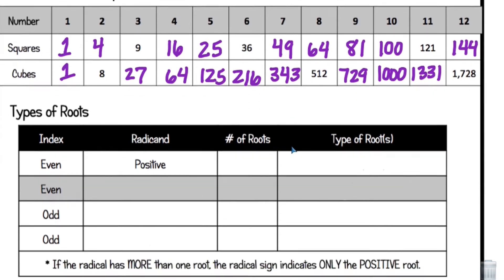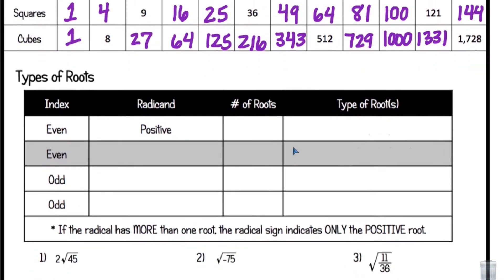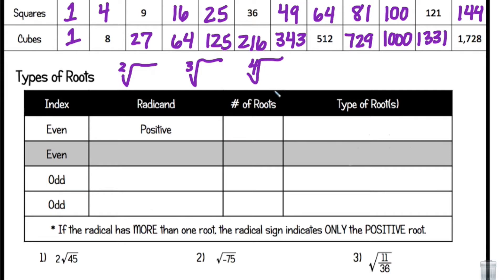Once you have that, we can continue on with types of roots. For types of roots, we're going to be looking at the index, the radicand, number of roots, and type of roots. Remember that the index is the number that would be right here — if there isn't a number, we know that it is two. If there's a number there, it could be a cubed root, a fourth root, and so on.